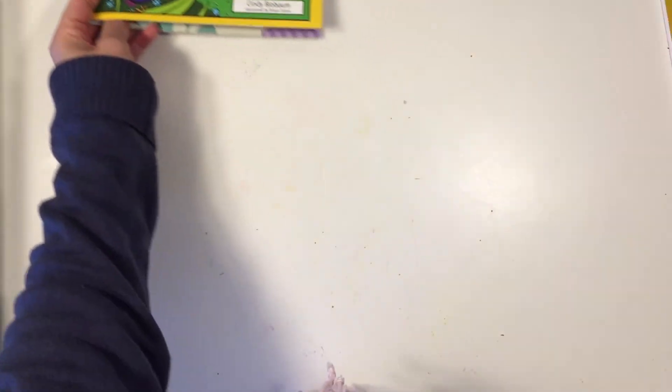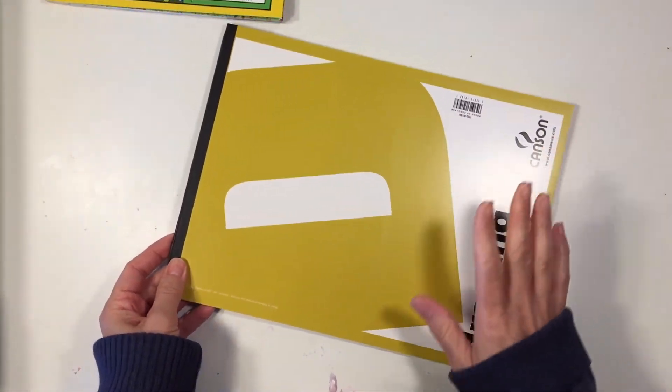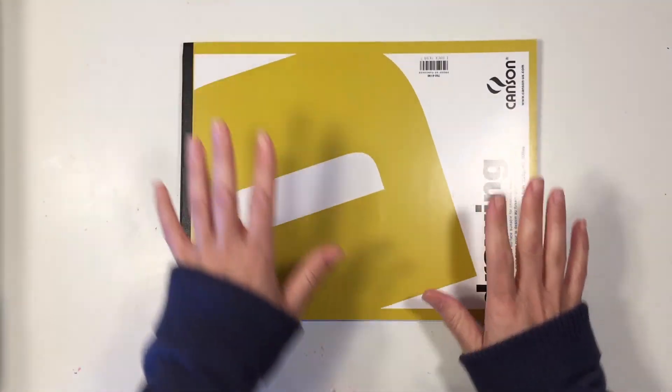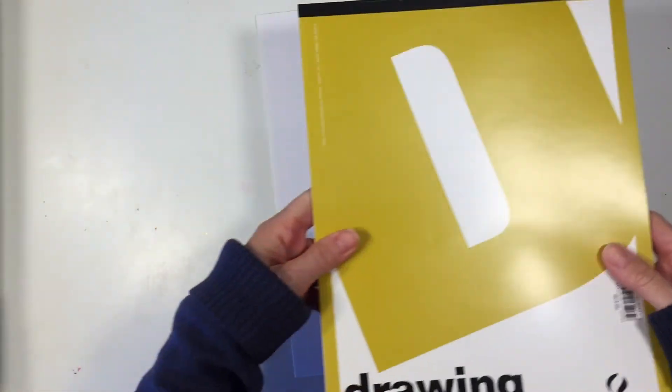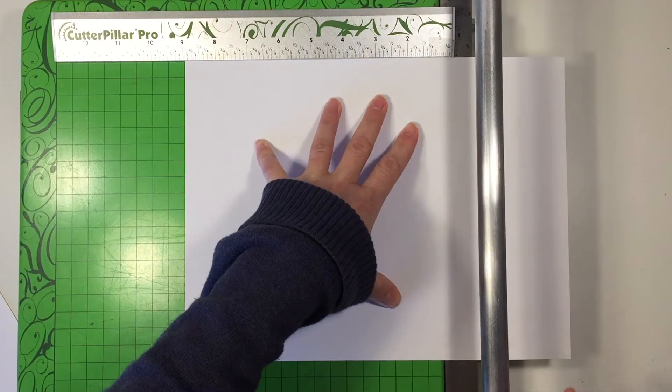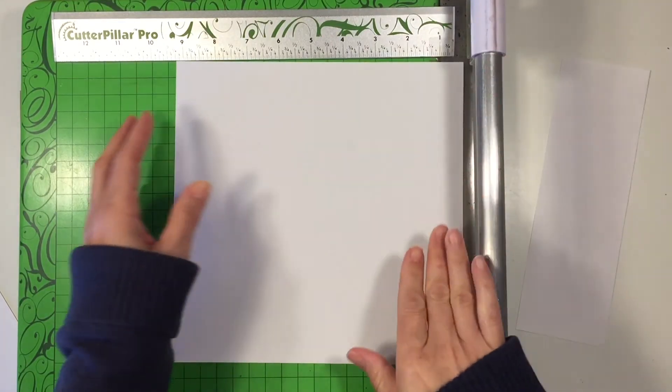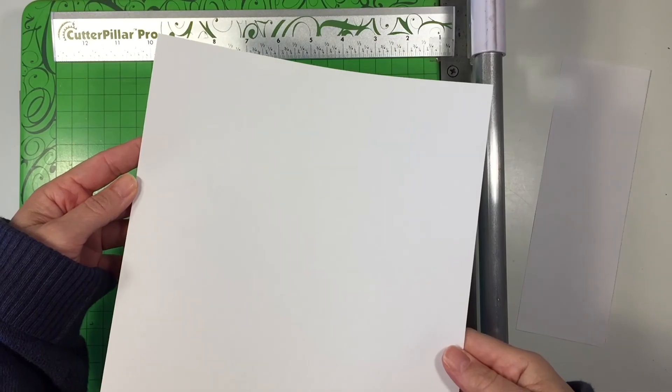For this project you're going to need some paper. We're going to use drawing paper rather than just printer paper, but you could use any paper you want. This paper happens to be 9 by 12 inches, so the first thing you want to do is cut it down to a square. I'm using my paper trimmer for this part and I'm just going to cut it down to 9 inches by 9 inches.